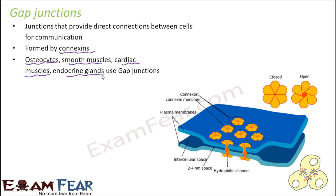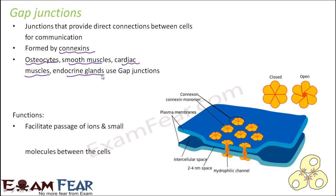Gap junctions facilitate the passage of ions and small molecules between cells, which is very different from tight junctions that don't allow even water to pass. Gap junctions allow communication between cells. In summary, wherever protection is needed, tight junctions are present; wherever passage of ions is needed, gap junctions are present — that is why they are found in different locations.